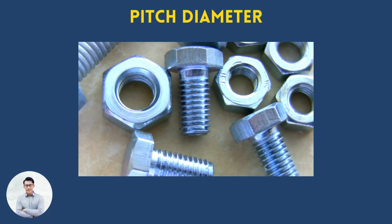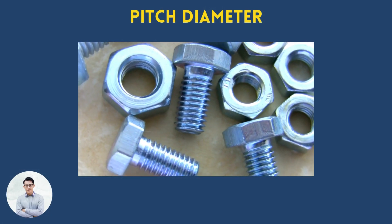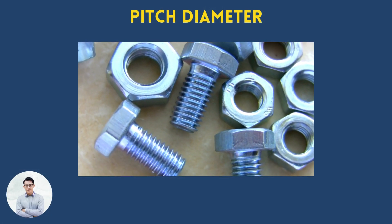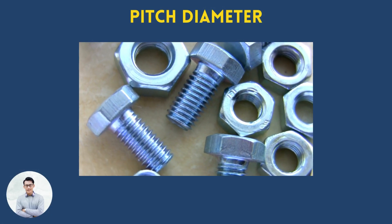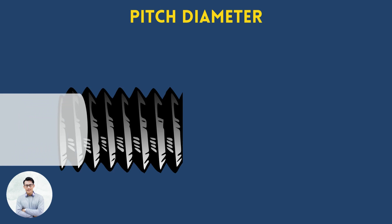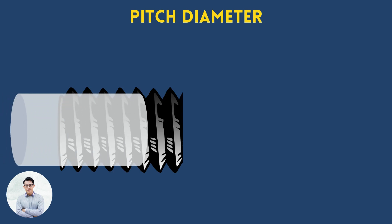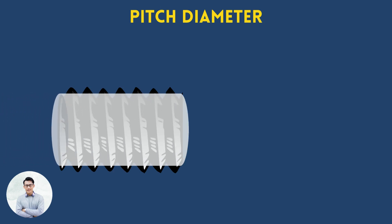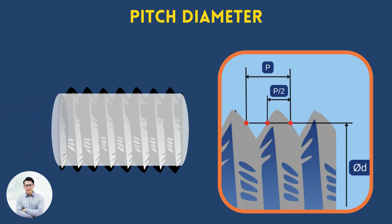The pitch diameter, also called the effective diameter, is the diameter of an imaginary cylinder that intersects the thread, so that the distance between two intersection points at opposite flanks equals half of the pitch.